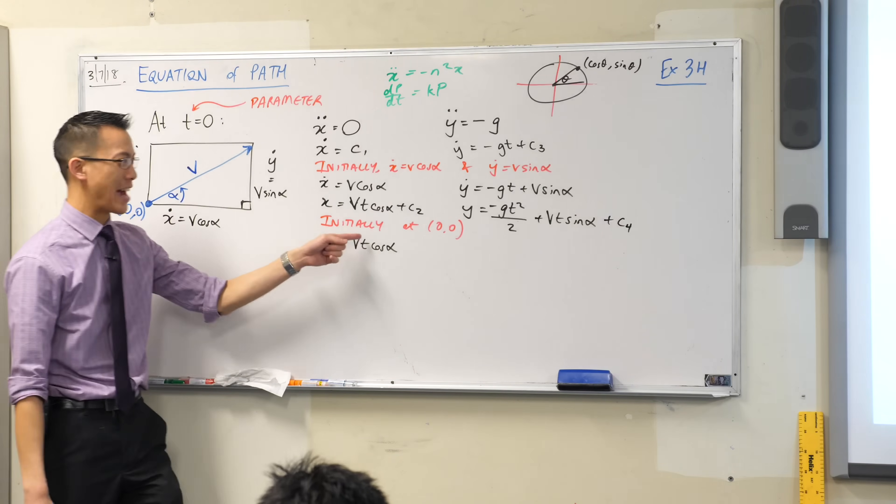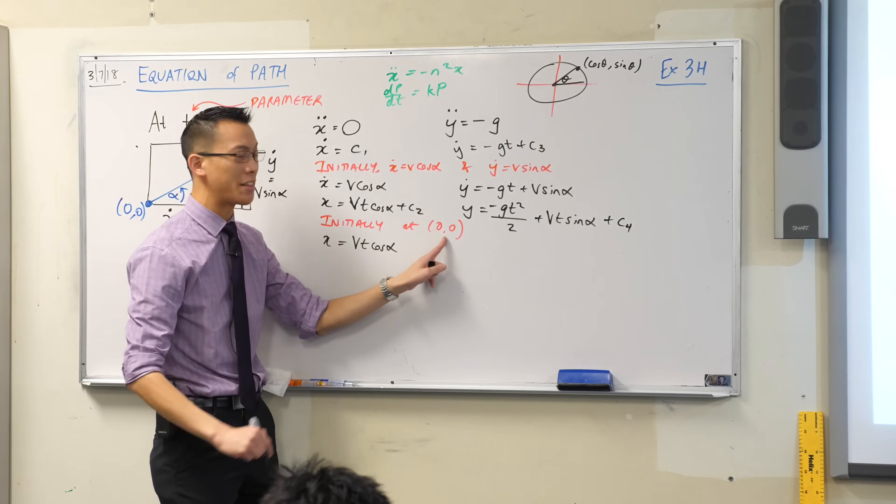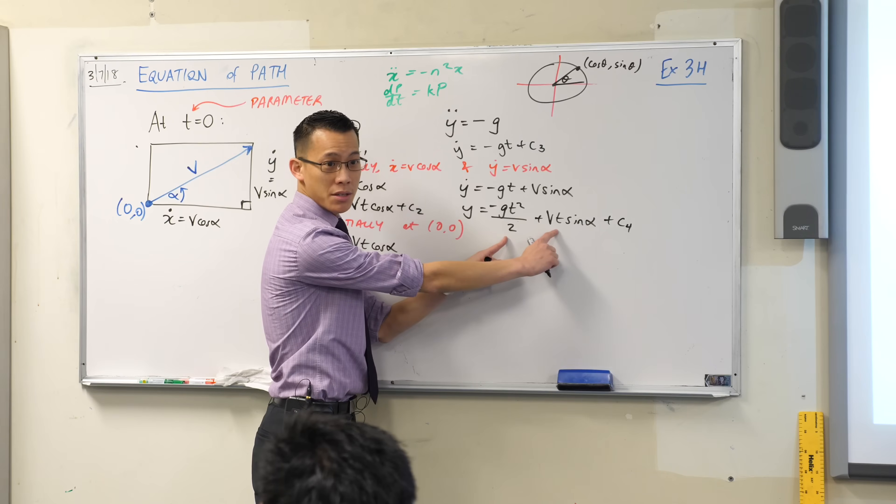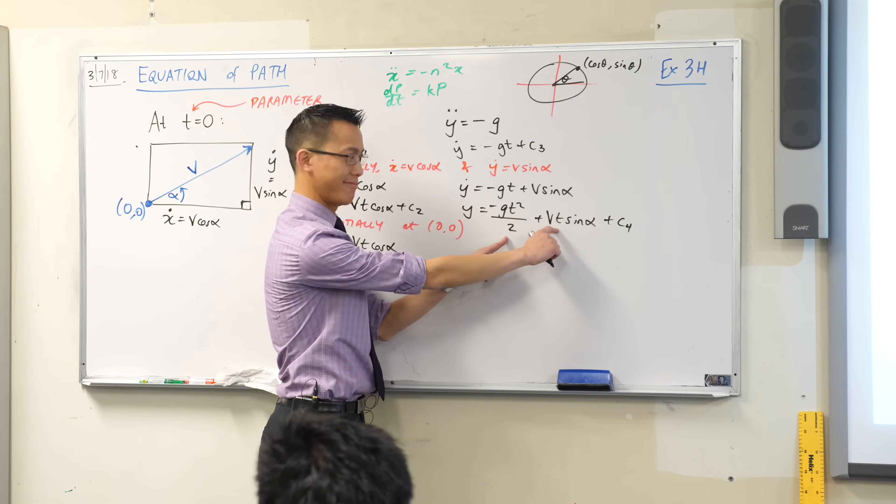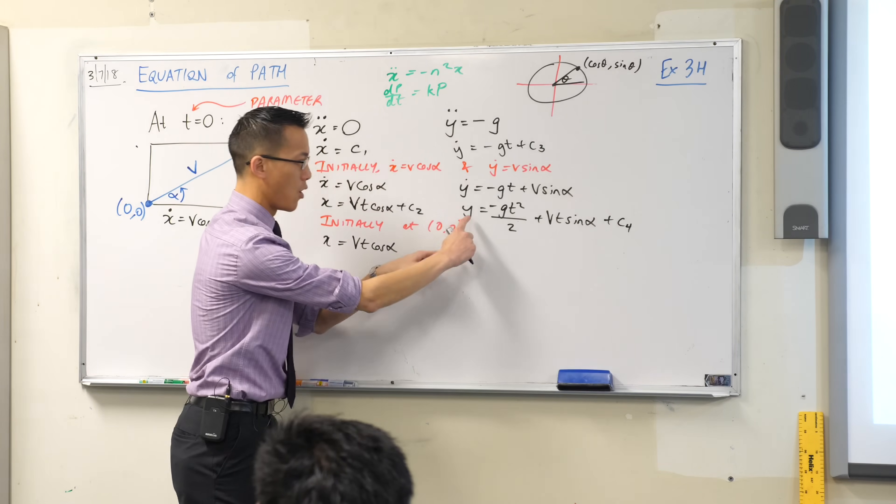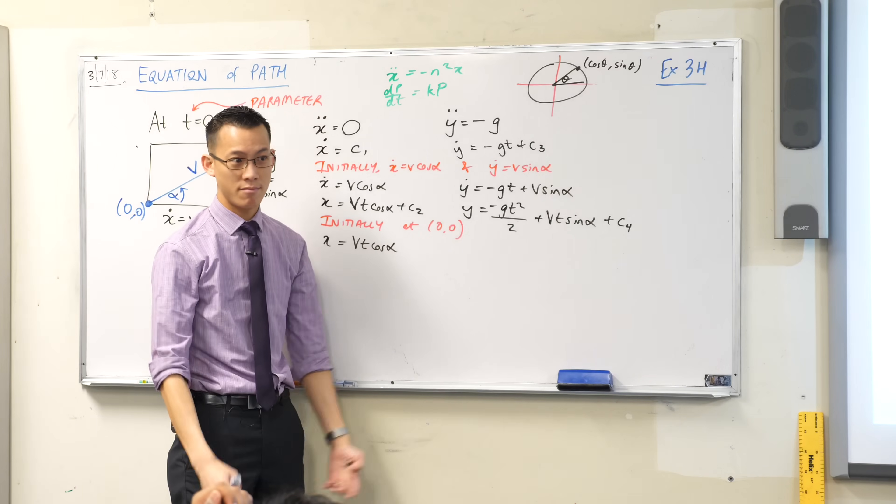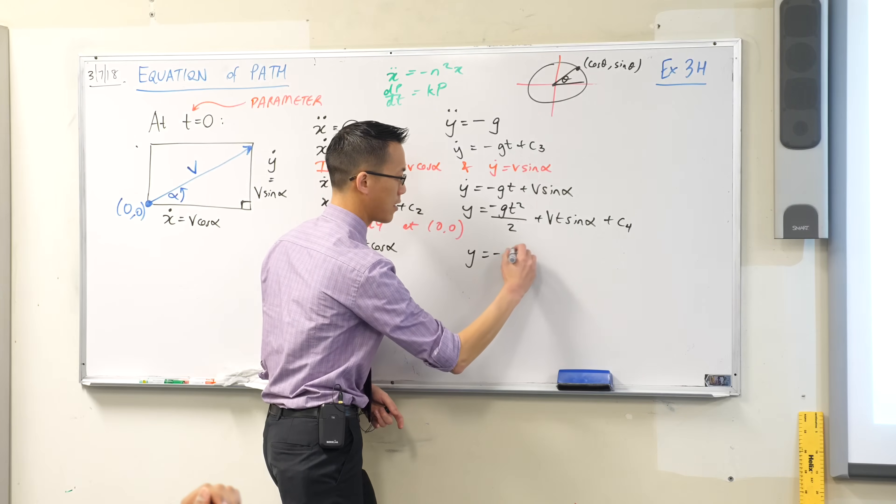There it is, yes. Okay, now just like before, we had initial condition, excuse me, we're at the origin. So when we put in t equals zero, what happens to these guys? Gone, right? Y equals zero because I'm at the origin, so what will C4 be? Zero, that's nice. Okay, great. So we have, at long last, all six of our equations. Give yourself a pat on the back.